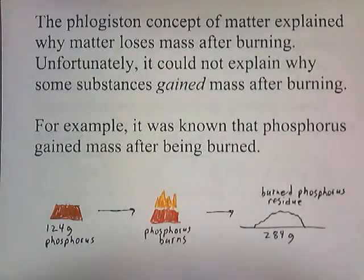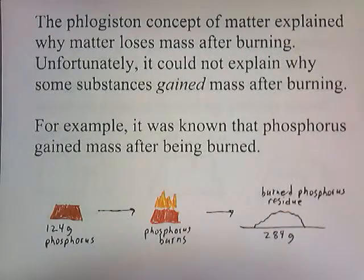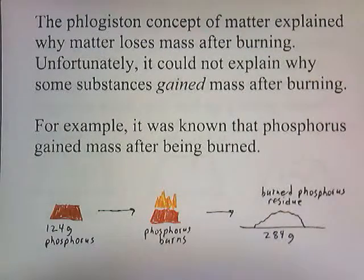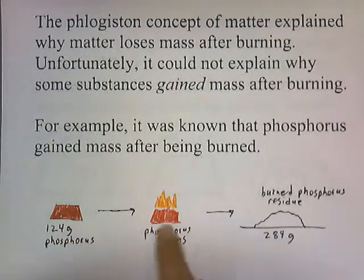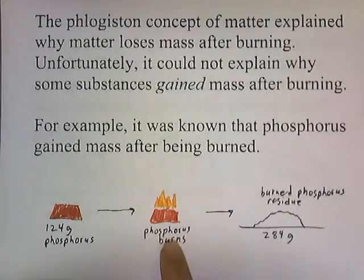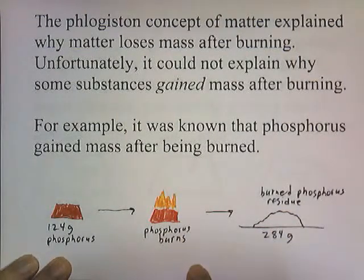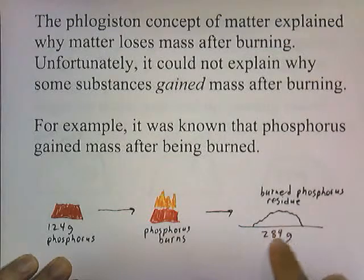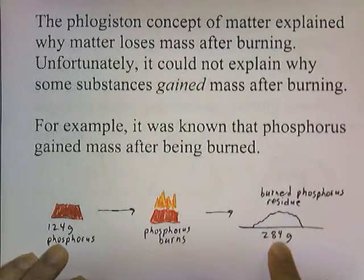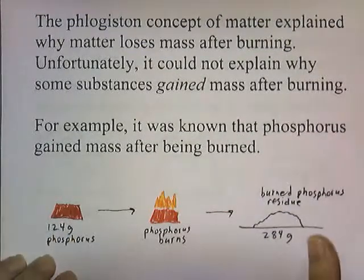The phlogiston concept explained why matter loses mass after burning. Unfortunately, it couldn't explain why substances gained mass after burning. For example, it was known that phosphorus gained mass after being burned. They knew that if you lit phosphorus on fire, it would burn, and then after it burned it would leave behind this white residue — but when they weighed this white residue, it always weighed more than what the material started with.